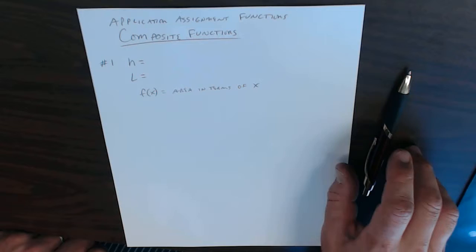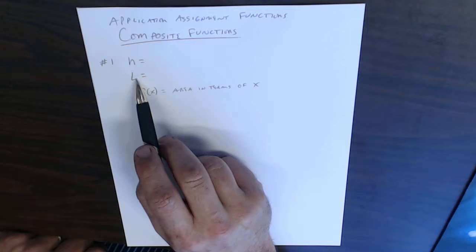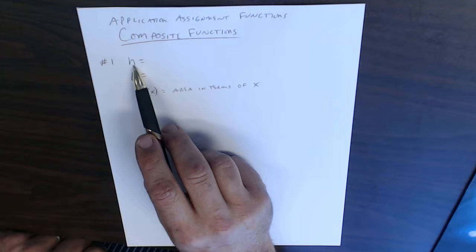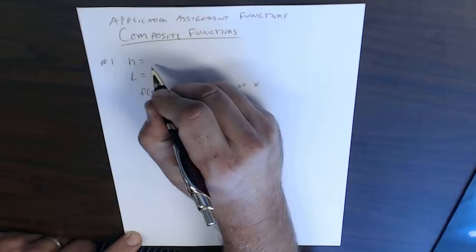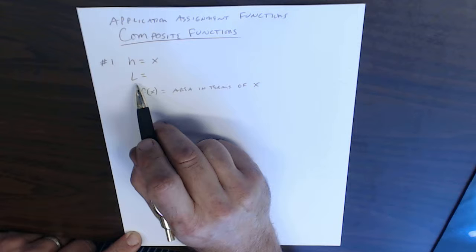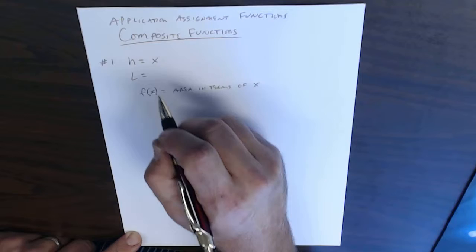The first thing when using composite functions is make sure you label what your variables are. So we have h, in this case it says h equals height equals x, and then it says the length. The length equals what? The length is 2 more feet than the height, so 2 more than would be x plus 2.